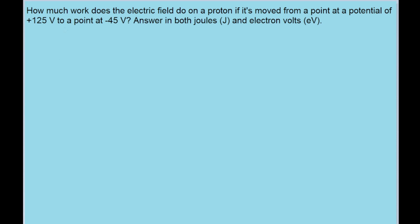Now first things first, it says that the particle starts at a point of positive 125 volts and ends at a point of negative 45 volts. So to find the actual potential difference here, we'll take the final position and subtract from it the initial position. So that's negative 45 volts minus 125 volts, and the potential difference here is negative 170 volts.